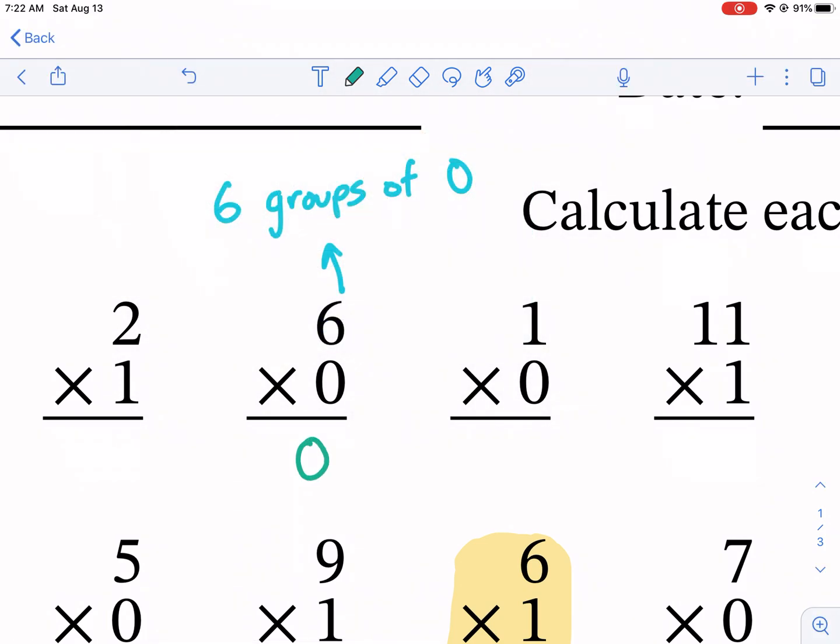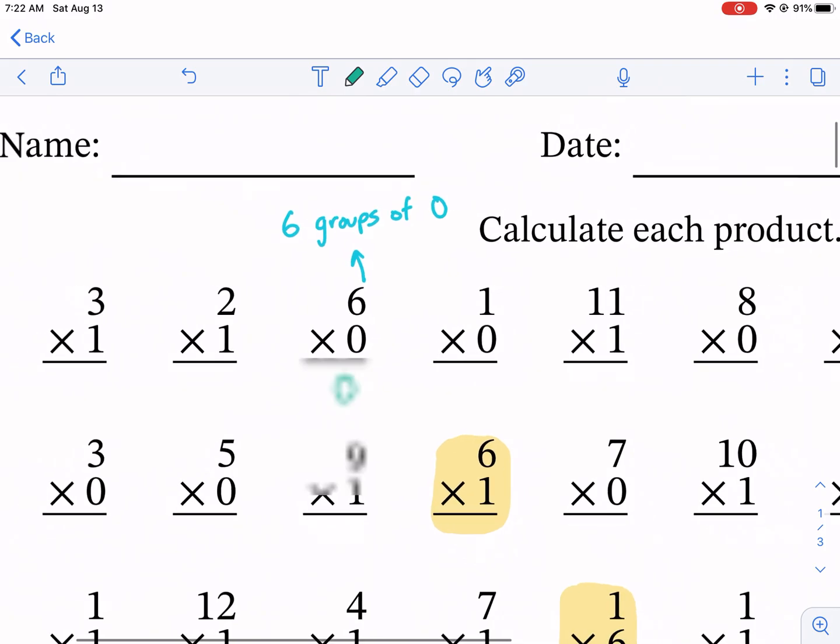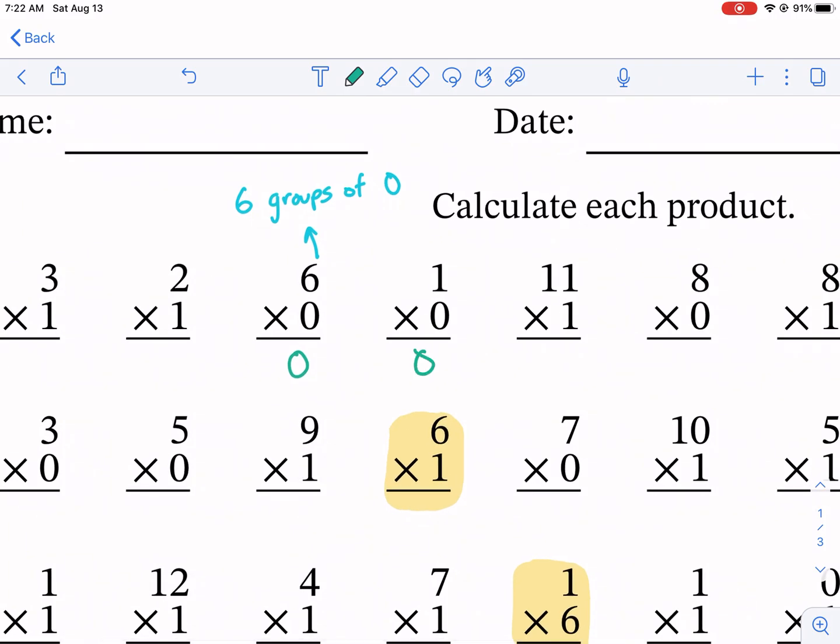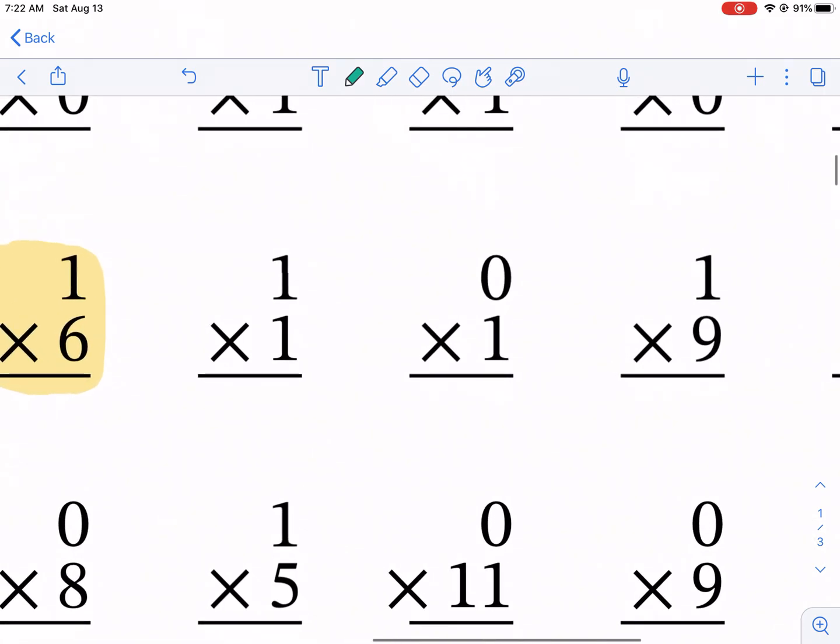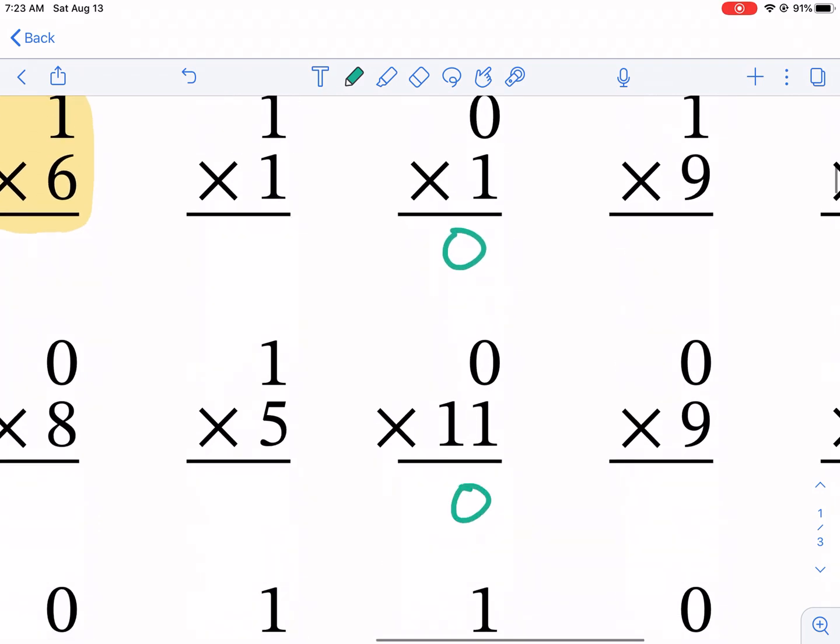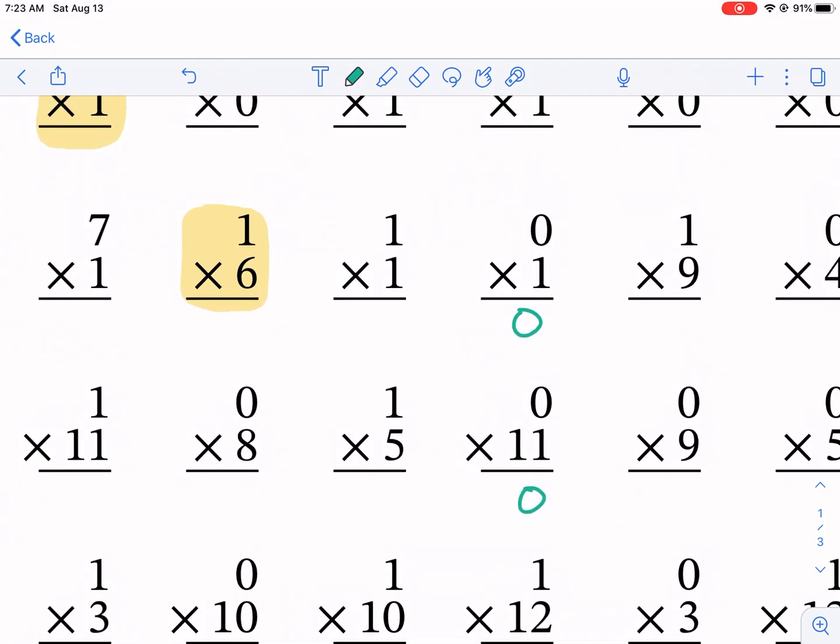So what happens is anytime you multiply by zero, you're just gonna get zero. Anytime you see a zero next to this multiplication sign, either in the top or the bottom, most of these are in the bottom here. Here's one on the top, so zero groups of one. If you have a group of one but we don't have any groups, it doesn't matter how many are in the group, it's still zero.